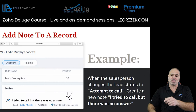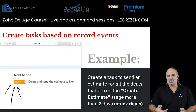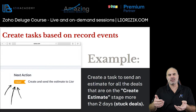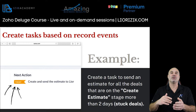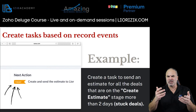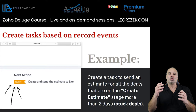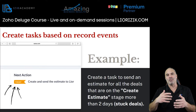The next use case is creating tasks based on something that happens in a record. For example, when the salesperson clicks on the stage 'Create Estimate,' we can set a bunch of tasks assigned to different people in the company. Maybe the engineer needs to create the draft of the estimate, and only when he completes that task will the salesperson get a notification to send the estimate to the client. There are many usages for creating tasks from Deluge across different use cases.